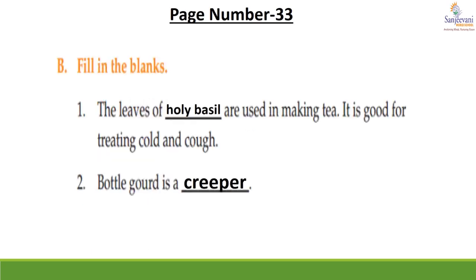Children, now come to page number 33, B part — fill in the blanks. First: the leaves of dash are used in making tea; it is good for treating cold and cough. The answer is holy basil — H-O-L-Y B-A-S-I-L. Second: bottle gourd is a dash. The answer is creeper — C-R-E-E-P-E-R.